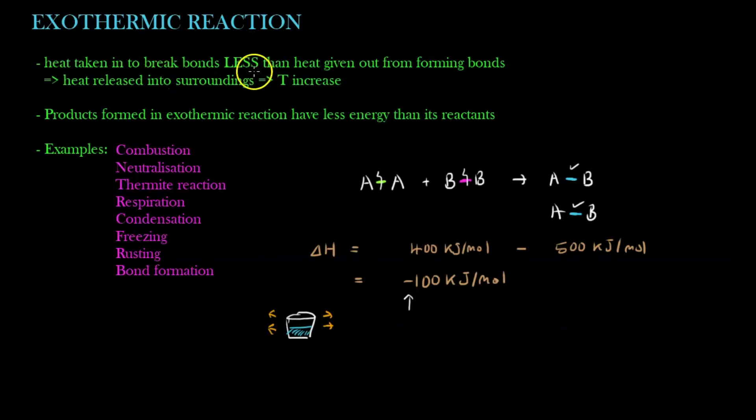So some examples of this exothermic reaction are combustion, obviously, right, when you burn, for example, like wood, if you burn at your fireplace, some countries have fireplace. When you burn this pile of wood here, what do you get? Obviously, you get warmth, right? So this is because the heat is traveling outwards, and that's why combustion is an exothermic reaction. What else? Neutralization, thermite reaction, blast furnace, respiration, condensation, freezing, rusting, and bond formation. That's the most important here. This is exothermic.